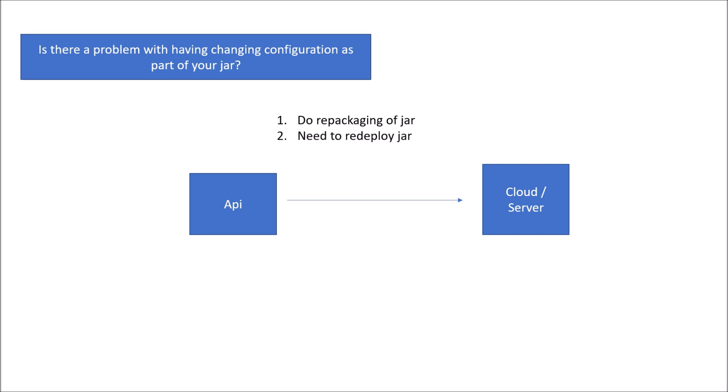If you have two or three microservices in your project, it is simple enough to do manually or using a CI/CD pipeline. But if you need to scale those microservices regularly, or you have 10, 50, or 100 microservices, can you do it manually? No. So the approach here is that you would need a mature config server.